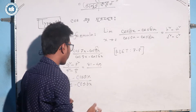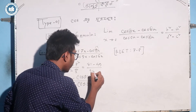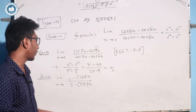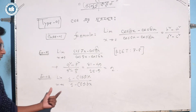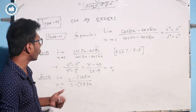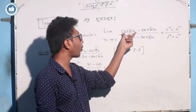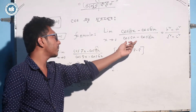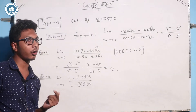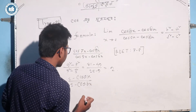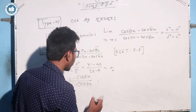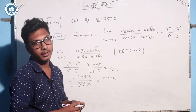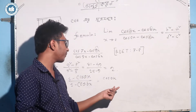So this math is 81 minus 49 by 25 minus 9. This math gives us the numerator as 32 and denominator as 16, so the result is 2. Now, cos 0x — if cos x is 1, then this math is 1. So cos 0x, where x is the variable, the math is 1.